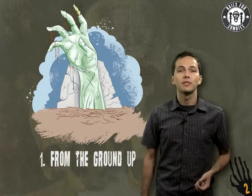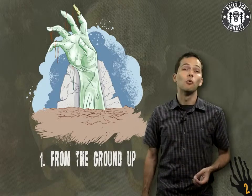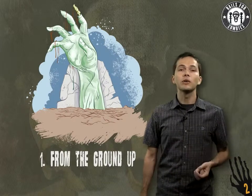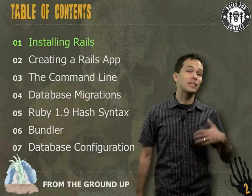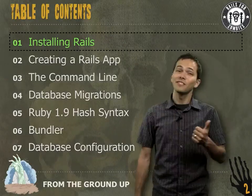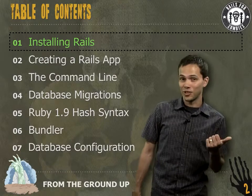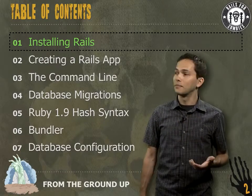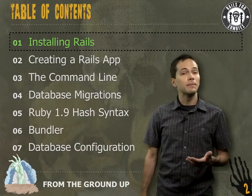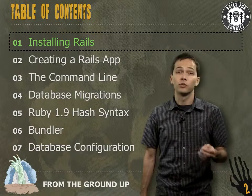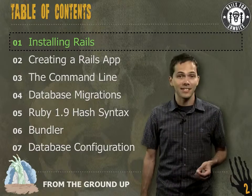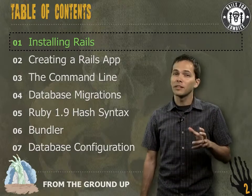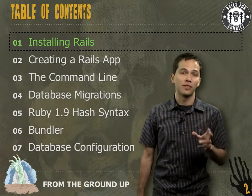Welcome to Rails for Zombies 2, Level 1. In this episode, we're going to be going over some of the things we left out in the first set of Rails for Zombies videos, covering things like creating a Rails app, the command line, database migrations, the Ruby 1.9 hash syntax, as well as a little bit of bundler and database configuration.